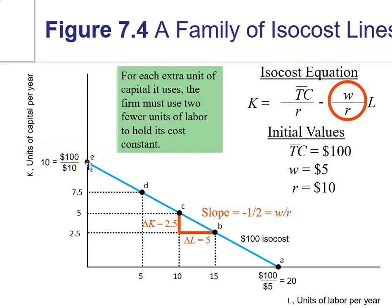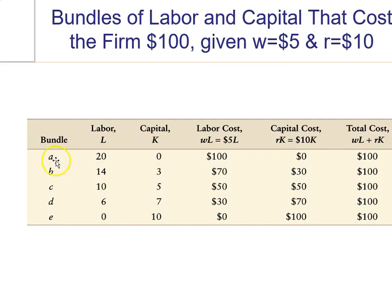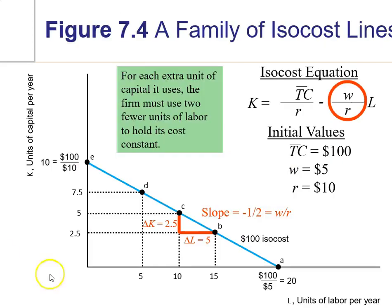So, you have a line that connects the y-axis, K, to the x-axis, which is L. And recall on the previous, we had a bundle A, which was spend all your money on workers, or 20 workers and no machines. That corresponds to this point right here.